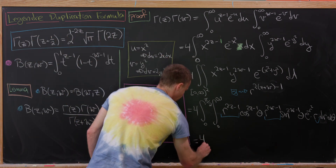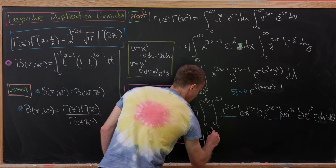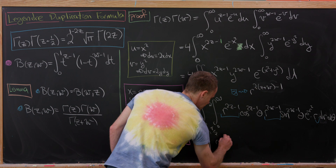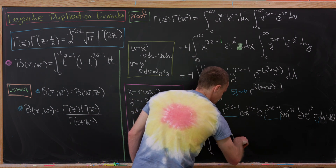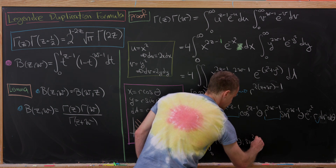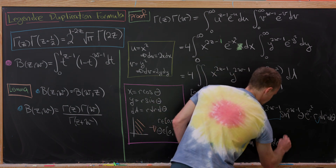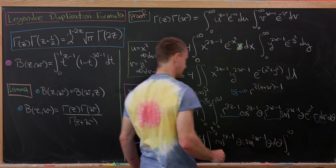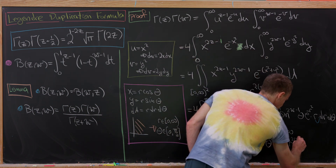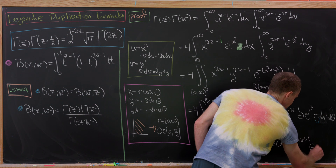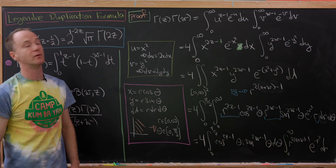We can now rewrite this as a product of integrals: 4 times the integral from 0 to π/2 of cos^(2z-1)θ · sin^(2w-1)θ dθ, times the integral from 0 to infinity of r^(2(z+w)-1) e^(-r²) dr.